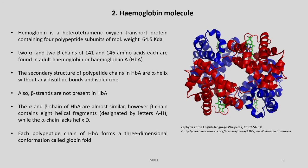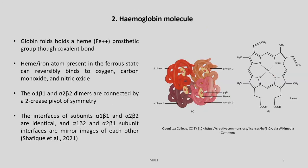The alpha and beta chains of HbA are almost similar. However, the beta chain contains 8 helical fragments designated by the letters A to H while the alpha chain lacks helix D. Each polypeptide chain of HbA forms a 3-dimensional conformation called globin fold. Globin fold holds a heme prosthetic group through covalent bond. The heme iron present in the ferrous state can reversibly bind to oxygen, carbon monoxide, and nitric oxide. The alpha-1 beta-1 and alpha-2 beta-2 dimers are connected by a two-fold axis of symmetry.